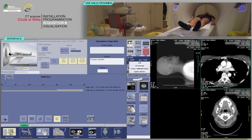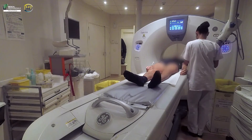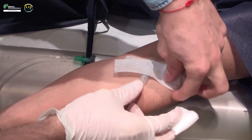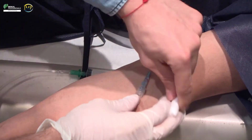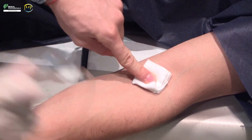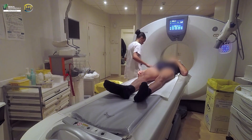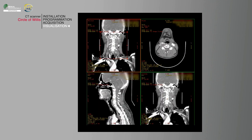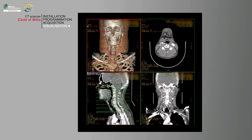After clicking End Exam, remove the patient's perfusion and escort the patient or request transport as needed. Be sure to give your patient post-examination instructions per department protocol. You can perform secondary reconstruction in MIP — maximum intensity projection — after removing the bone for the vessel study and for calcifications.